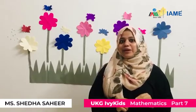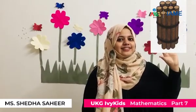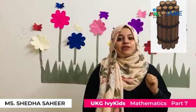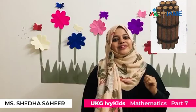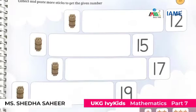Why don't we do some counting practice with the help of sticks? Let's count from 1 to 10. 1, 2, 3, 4, 5, 6, 7, 8, 9, 10. This bundle is 10 sticks, and it is called the 10s. Now let's do the counting practice from 11 to 20. 11, 12, 13, 14, 15, 16, 17, 18, 19, 20. You have to complete page number 12 in the project book, collecting and pasting sticks to get the number given.